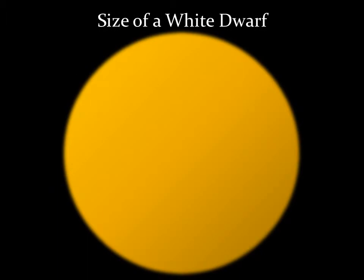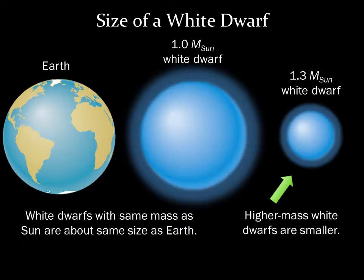A typical white dwarf has the mass of the Sun compressed into a volume the size of Earth. Imagine compressing all of the Sun's mass into the volume of Earth — it sounds impossible, but that's a white dwarf. More massive white dwarfs are actually smaller in size than less massive ones. For example, a 1.3 solar mass white dwarf is half the diameter of a 1 solar mass white dwarf. The more massive white dwarf is smaller because its greater gravity can compress it to a much greater density.